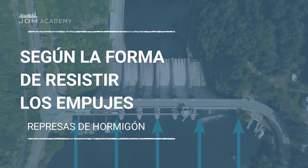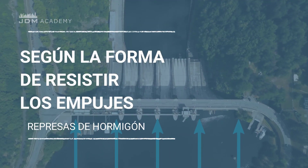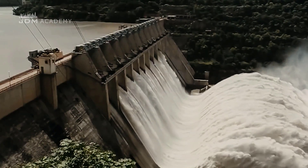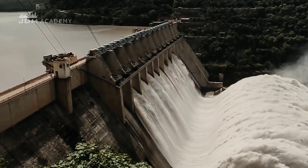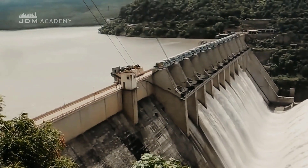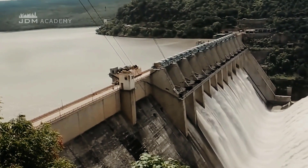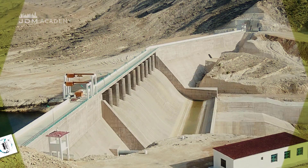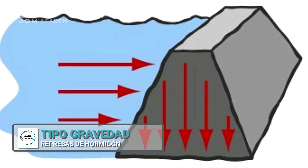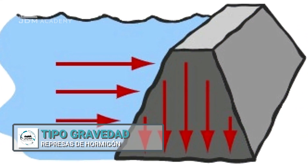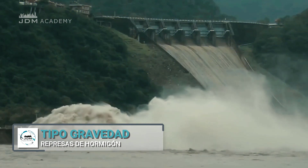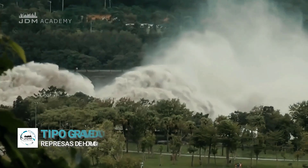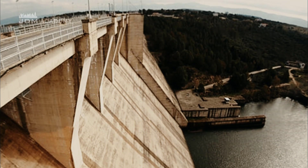Types of concrete dam according to how they resist thrust. Within concrete dams, a new typological classification can be established based on their resistance mechanism. Represas de gravedad (Gravity dams) — their own weight resists the hydrostatic thrust. Within them, a subclassification can be established according to whether they are solid (macizas) or lightened (aligeradas).